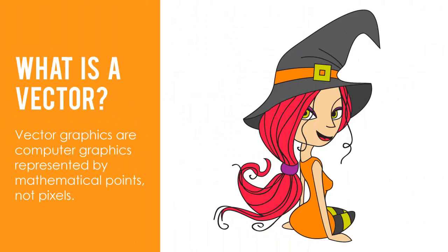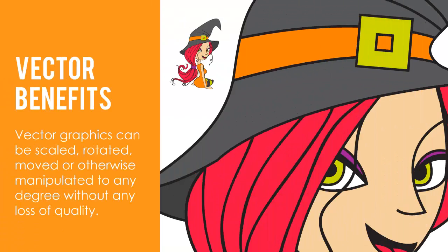Vector graphics are computer graphics represented by mathematical points, not pixels. Vector graphics are generated by illustration software such as Adobe Illustrator or CorelDRAW and can be scaled, rotated, moved, or otherwise manipulated to any degree without any loss of quality.